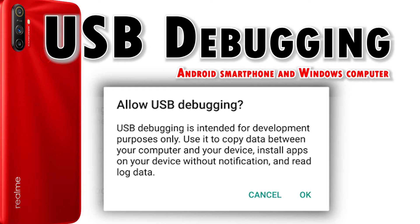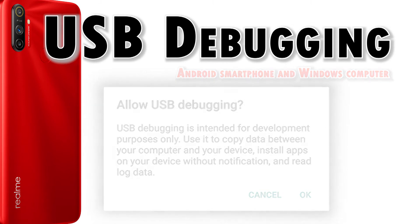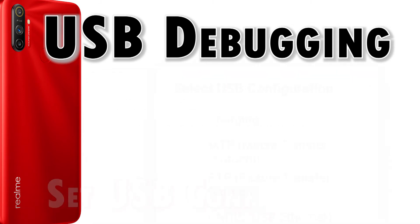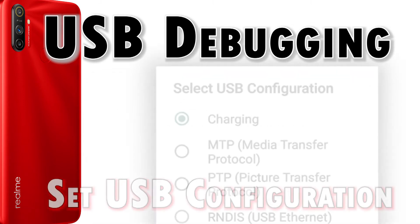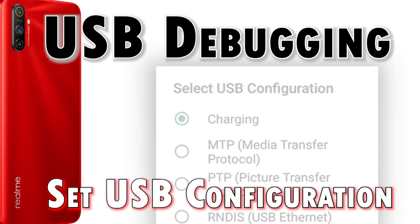Enabling USB debugging usually comes in handy when having trouble transferring files because the computer couldn't detect or access the phone. The same thing goes when the phone only charges when you plug it into the computer's USB port. Depicted in this tutorial video is the standard process of activating the Realme C3 USB debugging and setting the USB configuration.